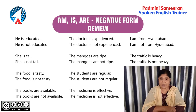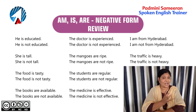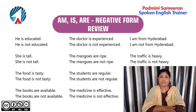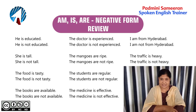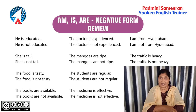'The doctor is experienced' — 'the doctor is not experienced.' 'I'm from Hyderabad' — 'I'm not from Hyderabad.' 'She's tall' — 'she's not tall.' 'The mangoes are ripe' — ripe means ready to eat, yellow and juicy — 'the mangoes are not ripe.' 'The traffic is heavy' — 'the traffic is not heavy,' meaning there is not much traffic. 'The food is tasty' — 'the food is not tasty.' 'The students are regular' — 'the students are not regular.' 'The books are available' — 'the books are not available.' 'The medicine is effective' — 'the medicine is not effective.'